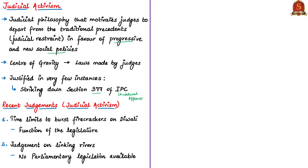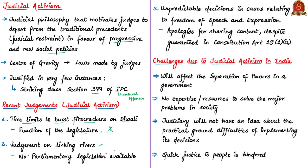The authors have mentioned three recent judgments as examples of problematic judicial activism. First, ordering time limits to burst firecrackers on Diwali — the authors note this as a function of the legislature, not the judiciary. Second, the judgment on linking rivers, for which there is no parliamentary legislation. Third, a very recent judgment in which a political party leader was asked in a bail order to apologize for sharing a meme on the Chief Minister of West Bengal, despite the guarantee under Article 19(1)(A) — the fundamental right to freedom of speech and expression. The authors note this as an unpredictable decision.